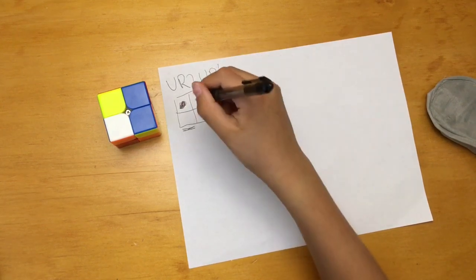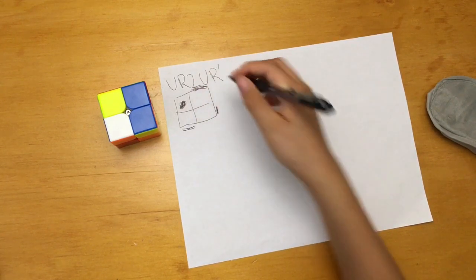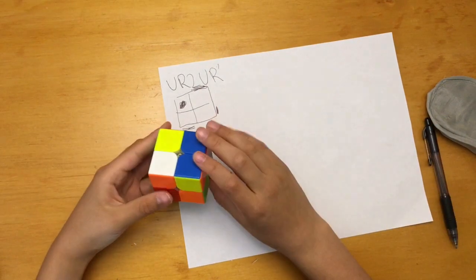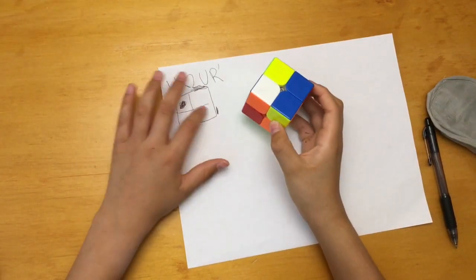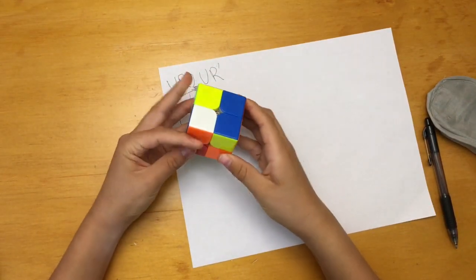And so this one will be an anti-sune. Then what you do here is recognize where the anti-sune will be.